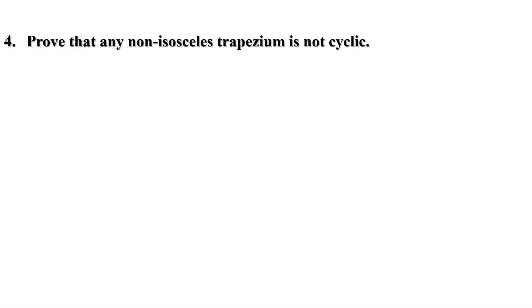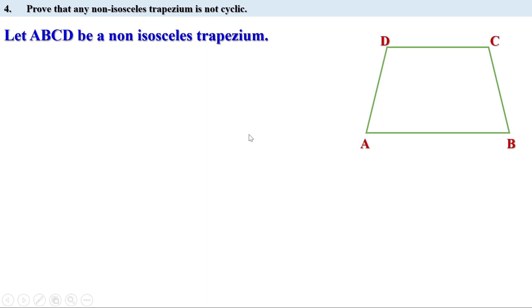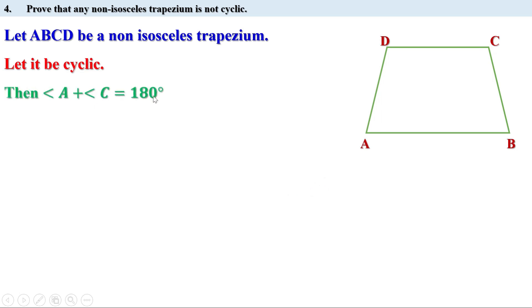Next problem: prove that any non-isosceles trapezium is not cyclic. A non-isosceles trapezium is a trapezium which is not isosceles. Let ABCD be such a trapezium. We have to prove it is not cyclic. We are going to use the contradiction method. Let us assume it is cyclic. If it is cyclic, the opposite angles are supplementary, so angle A plus angle C equals 180 degrees. Therefore angle A equals 180 minus angle C.